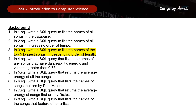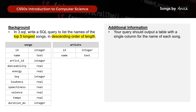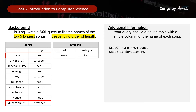For the third query, we need to list the names of the top five longer songs in descending order of length. Looking at our tables, what we need is the name and duration of the songs. So our query will be SELECT name FROM songs ORDER BY duration DESC LIMIT 5. That is the third query — sorted in descending order and limited to five records.